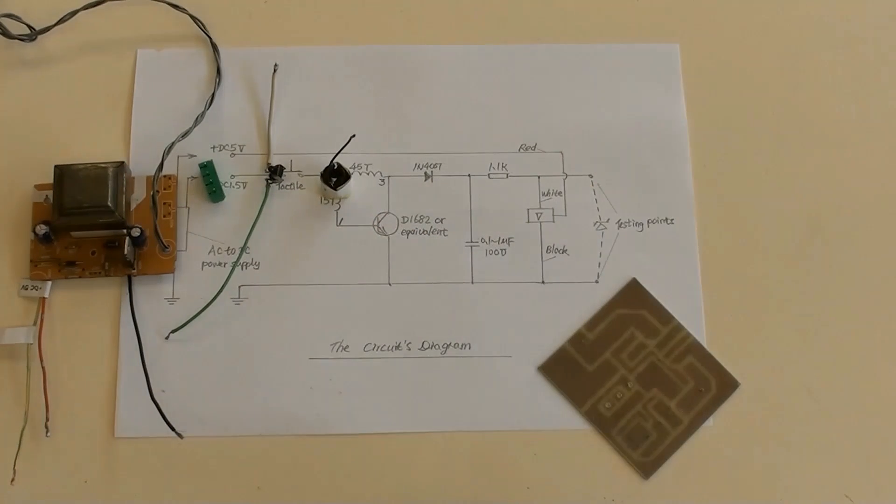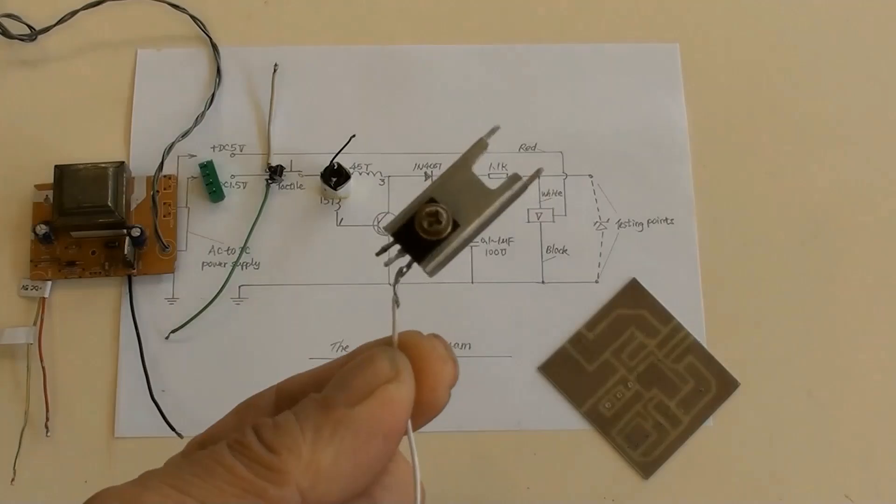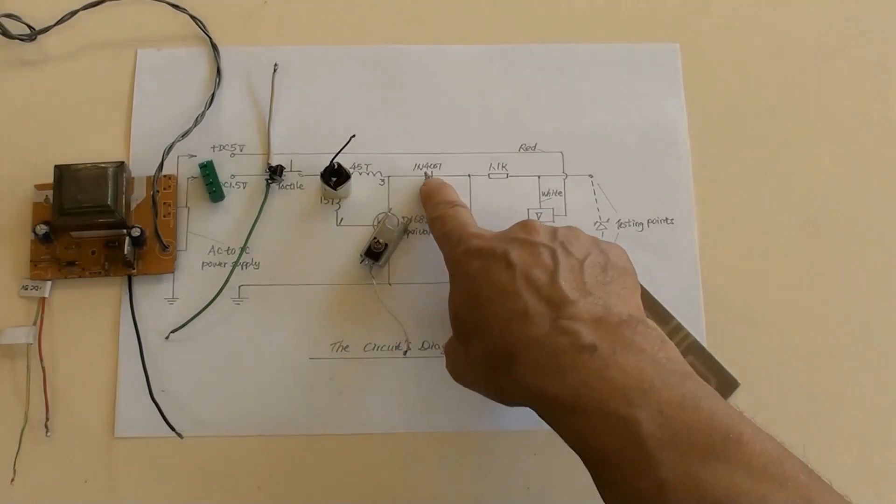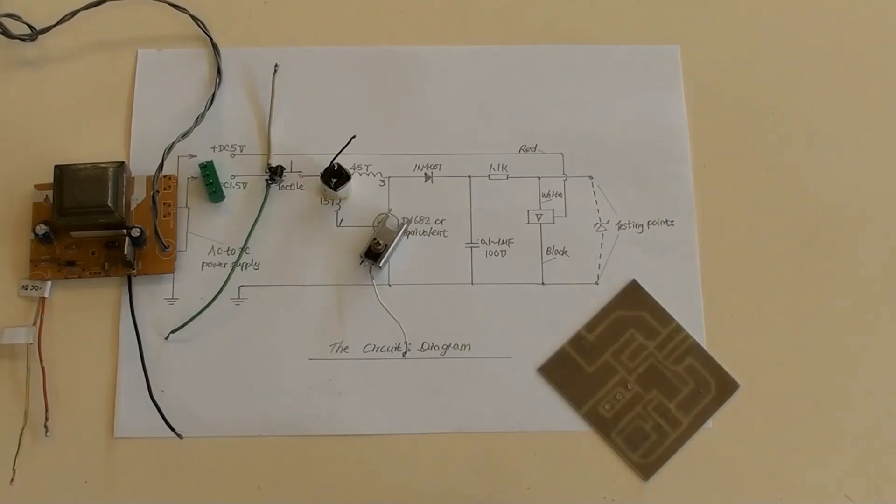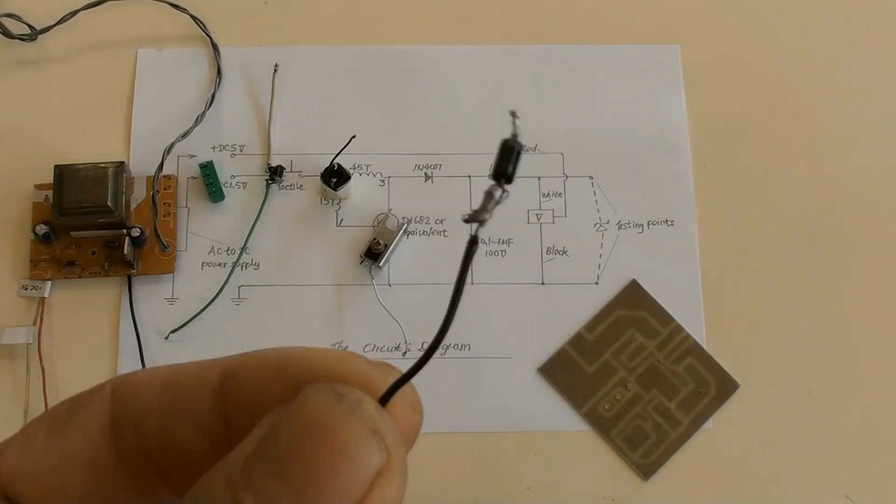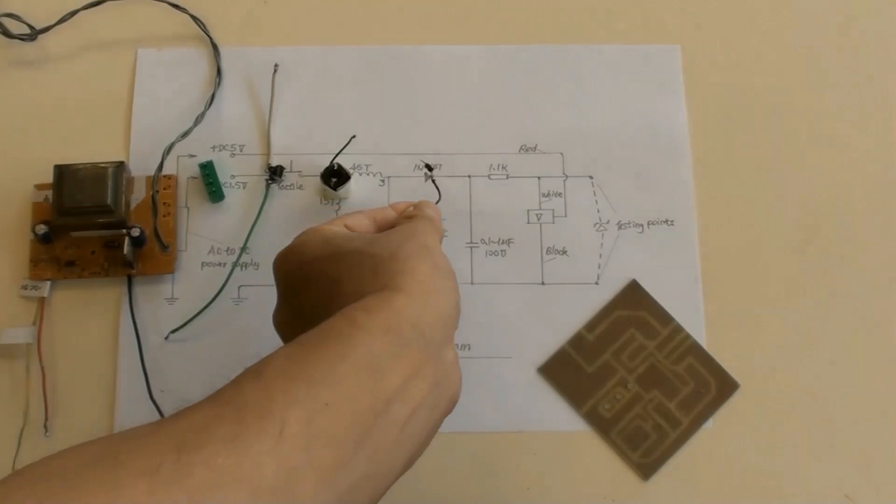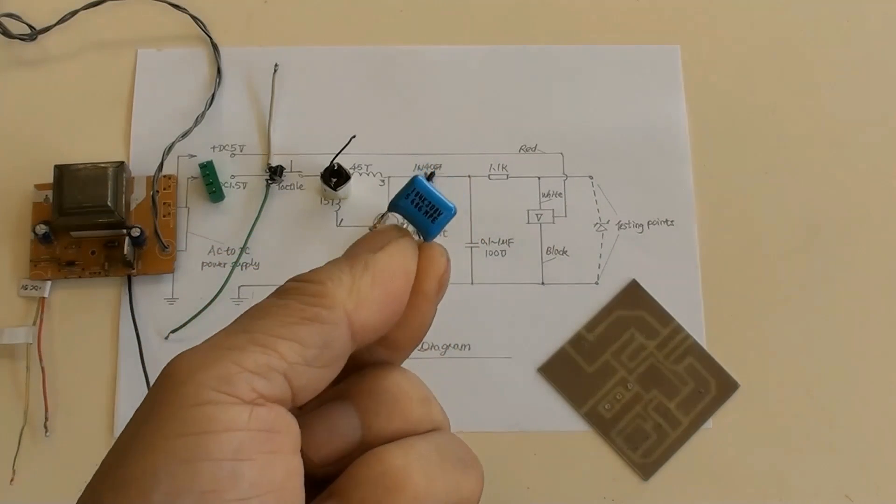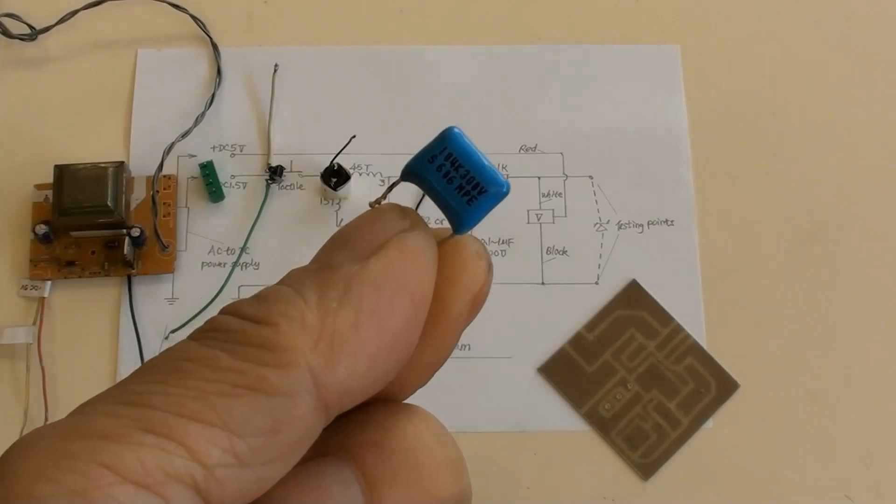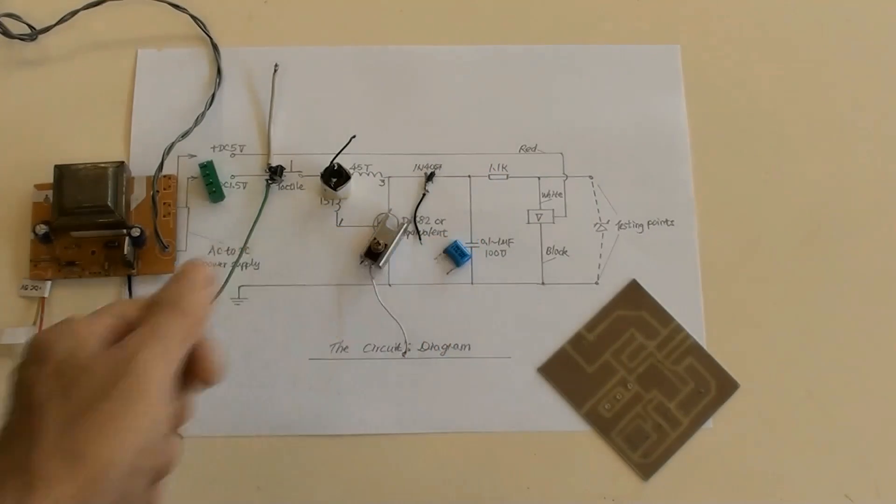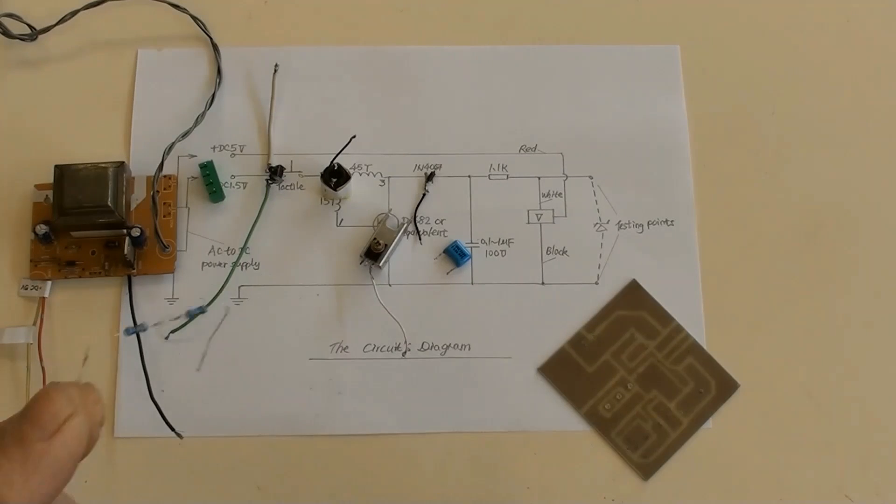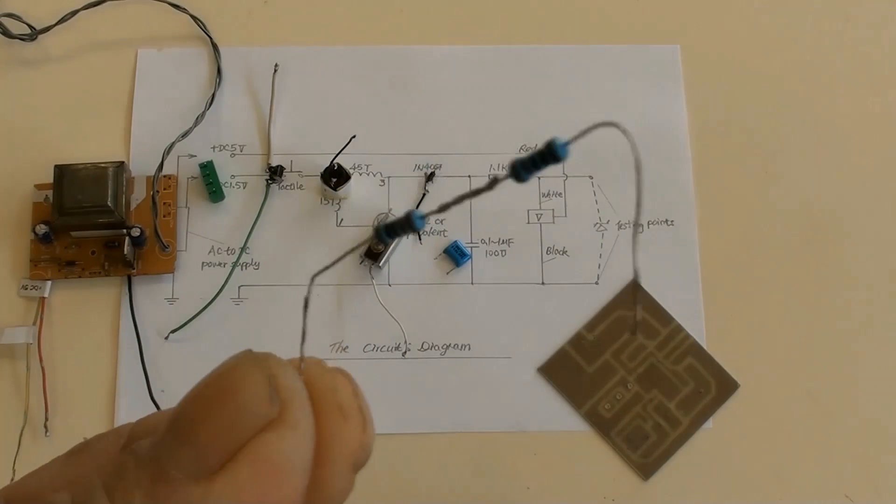This is the transistor of D1682. And it is here with a heat sink attached. That is the diode of 1N4007. And here. This is the capacitor of 0.1μF, 104k at 300 volt. And it is here. A DIY resistor of 1.1k ohms. It can be chosen for the value between 1k to 1.5k ohms.